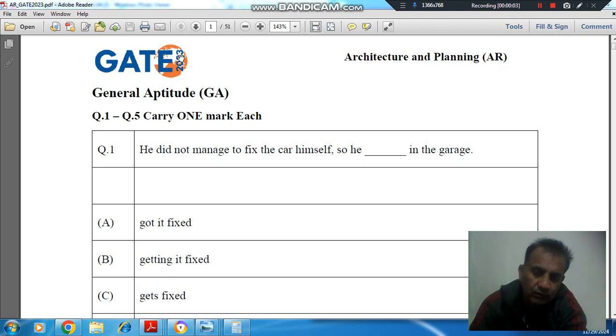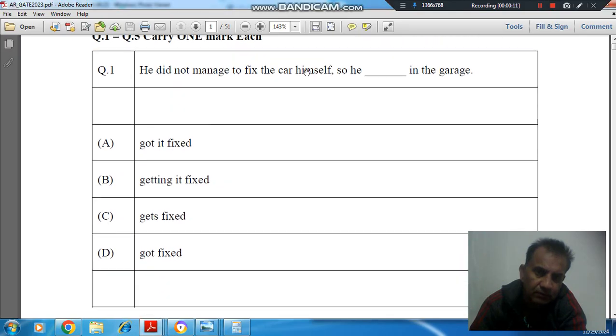Hello, welcome again. We are solving General Aptitude of GATE 2023 Architecture and Planning. Questions 1 to 5 carry one mark each. Question number 1 is: He did not manage to fix the